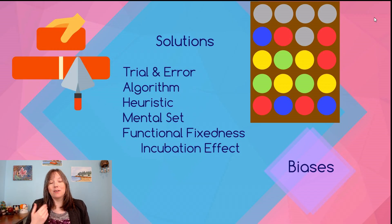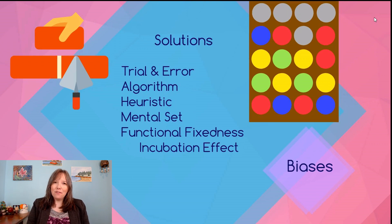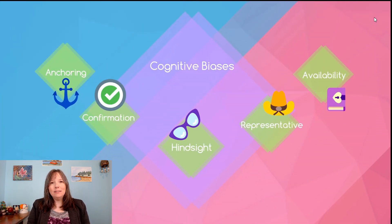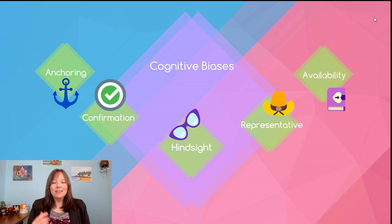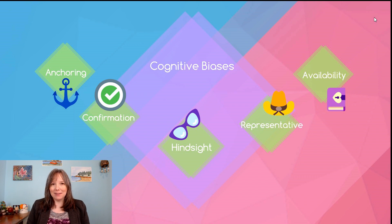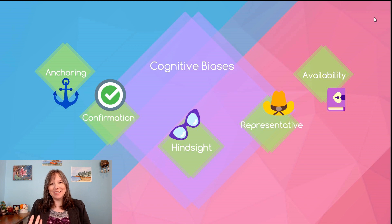One of the big problems with our heuristics and how we solve problems is our cognitive biases. As humans we're very fallible to making shortcuts that sometimes work but sometimes don't work. Some of the things that sometimes don't work are the anchoring, confirmation, hindsight, representative, and availability biases. This is where this unit sort of crosses over with philosophy or the study of logic.